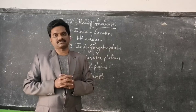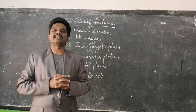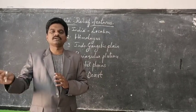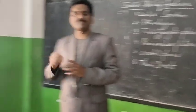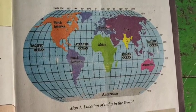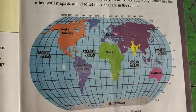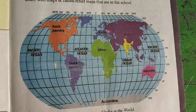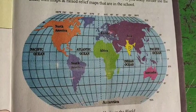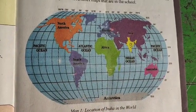Dear students, if you go through your textbook and observe very clearly the first map — map number one — you can clearly find a world map in page number one. This is the very first map which identifies and shows very clearly different continents and different oceans.